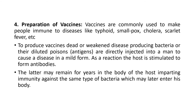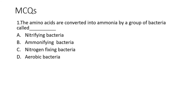Vaccines are commonly used to make people immune to diseases like typhoid, smallpox, cholera, and scarlet fever. To produce vaccines, dead or weakened disease-producing bacteria — or dilute antigens — are given in a very small regulated quantity, directly injected, where they cause the disease in a very mild form. This initiates a reaction in the host, stimulating the formation of antibodies to fight against it and build immunity against future exposure. The immunity may remain for years in the body, imparting lasting protection against the same type of bacteria that may later enter the body.